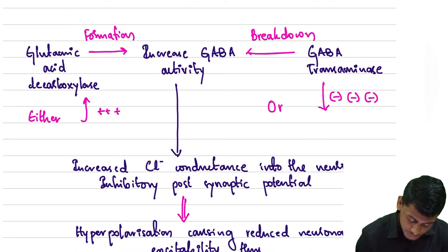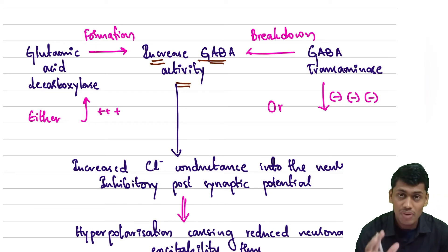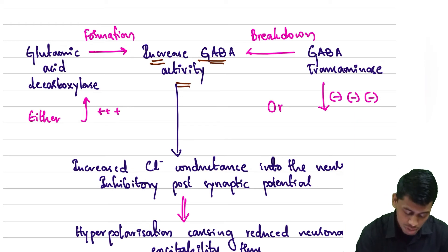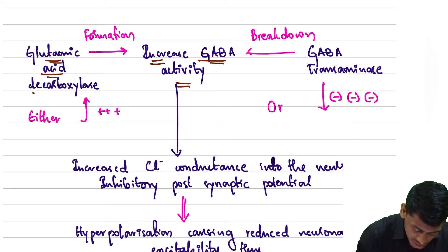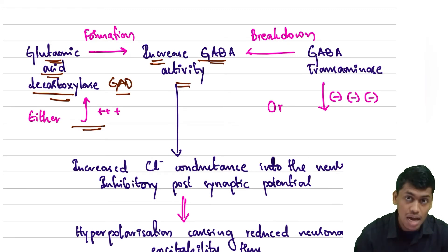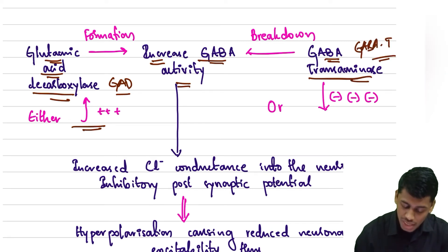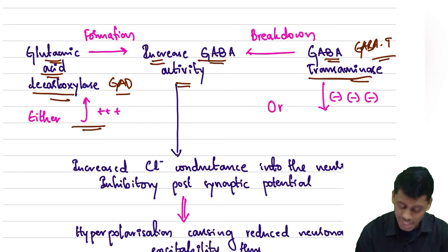The second mechanism involves increasing GABA activity. GABA activity can be increased in two ways: first, by stimulating glutamic acid decarboxylase to increase GABA production; second, by inhibiting GABA transaminase (also called GABA-T) to decrease the breakdown of GABA. Both approaches result in increased total GABA activity.